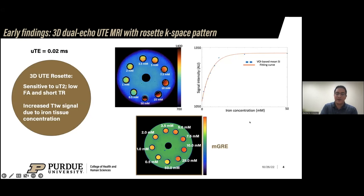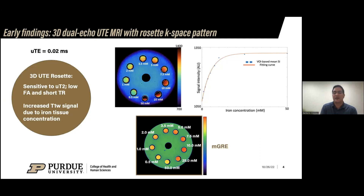At this point we're not seeing a lot of T2-star effects from what we see. We also compared that to a multi-echo conventional GRE sequence, and we don't see about the same effect — the signal decays much faster — and we believe that's because of the longer echo times, on the order of milliseconds and not microseconds.